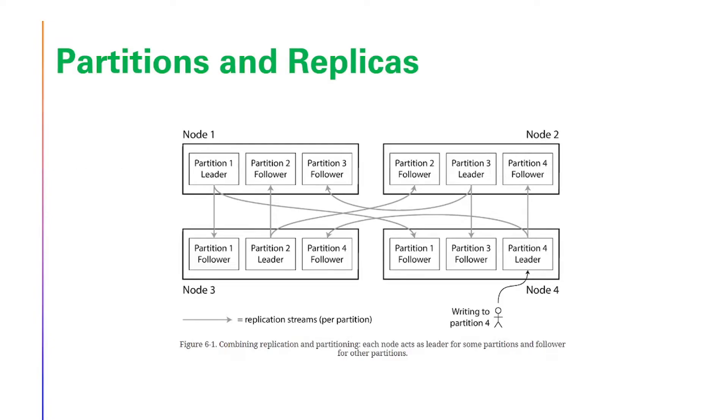Partitions and replicas. In this diagram, what we are showing is that each node acts as a leader for some partitions and follower for other partitions. Let's consider node 1 where it is a leader for partition 1 and followers for partition 2 and 3. Also please note that partition 1 in node 1 is a leader while partition 1 in node 3 is a follower.